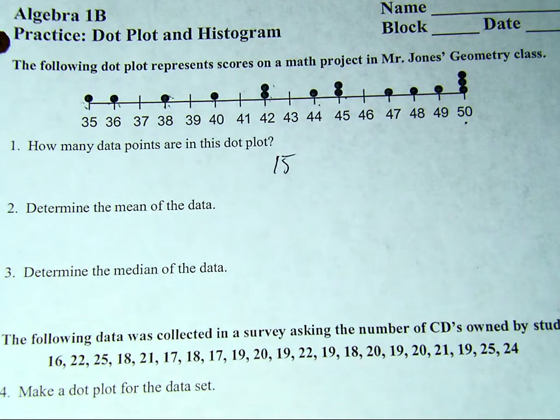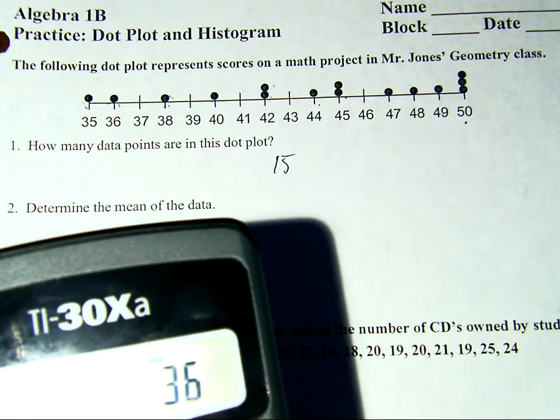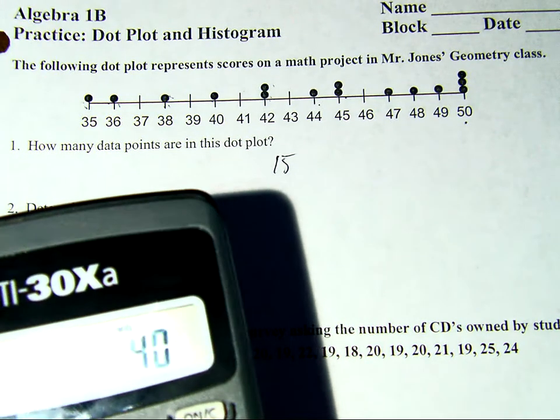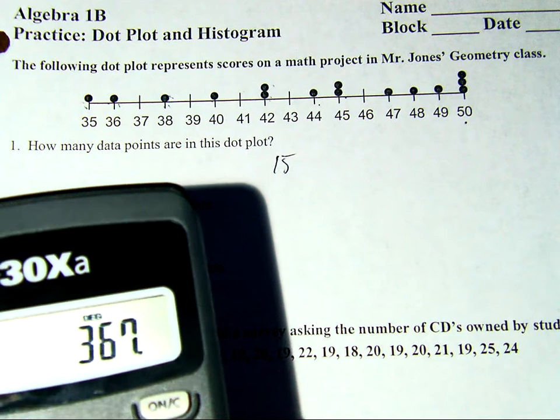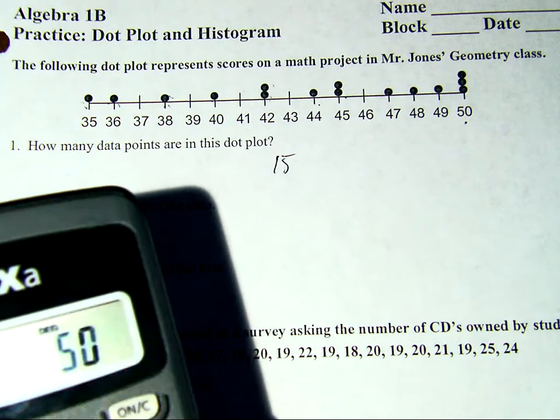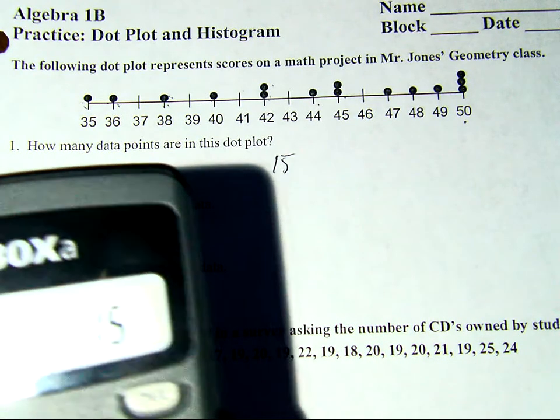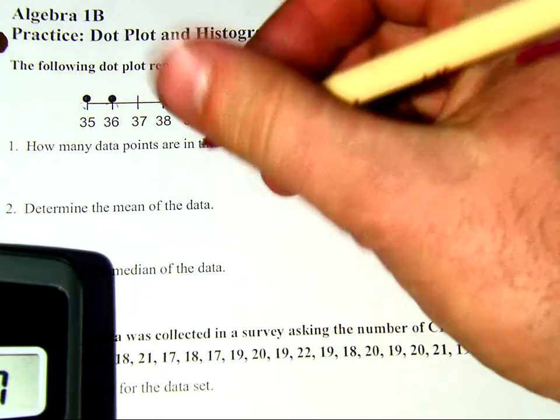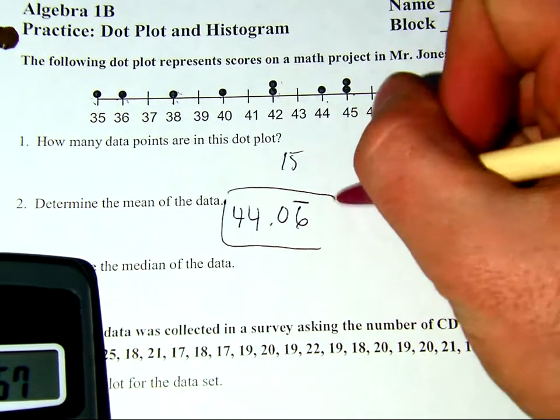To determine the mean of this, I'm actually going to take a calculator and figure that out. The way I find the mean of course is I add up all my total and then divide by how many samples I have. So here I have 35 plus 36 plus 38 plus 40 plus 42. I have a second 42 plus 44, 45, another 45, 47, 48, 49, and then three 50's. My total should be 661, I have 15 samples. So I divide by 15. I should get this whopping number 44.06 and that's going to repeat to infinity. That's my mean of this data set.